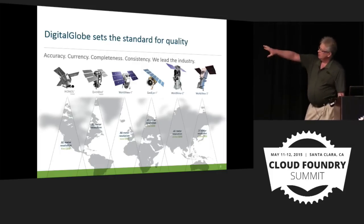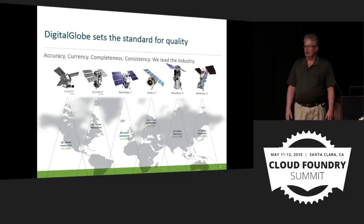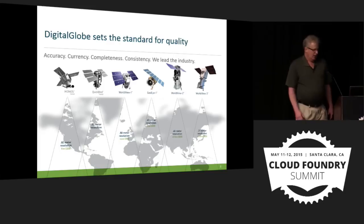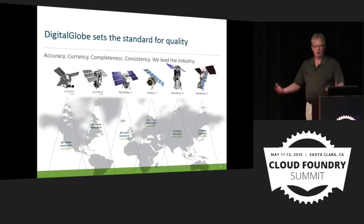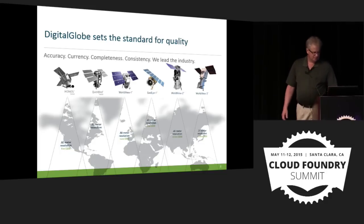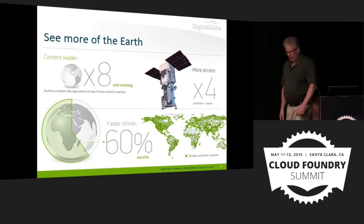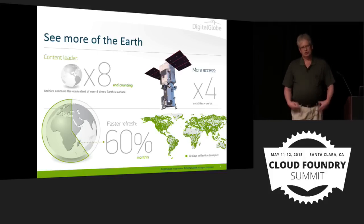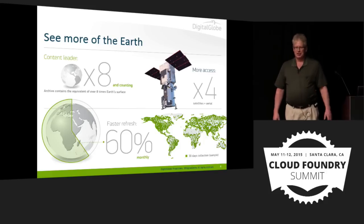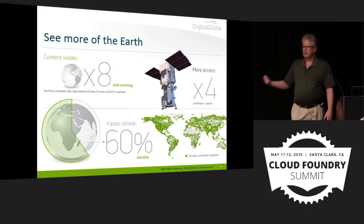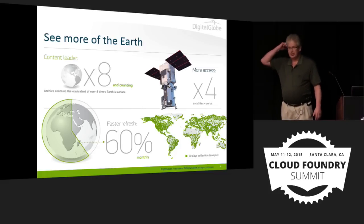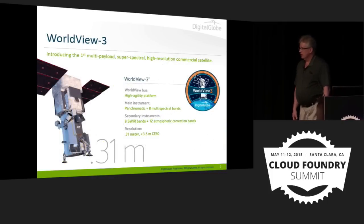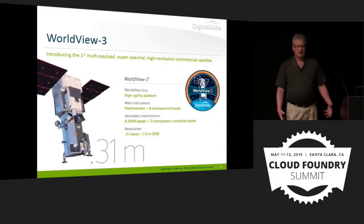We currently are flying a constellation. The ones in color are current and active; the ones in black and white have recently been retired. We have an archive of about 15 years of imagery that will show you how the world has changed over the last 15 years. If you took all of that archive and laid it down on top of the Earth, we'd cover the entire Earth's surface eight times over. Since most of the pictures we take are of land, you can imagine the stack is actually deeper than that. On a monthly basis, we gather an area roughly equivalent to about 60% of the Earth's surface.